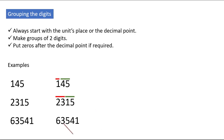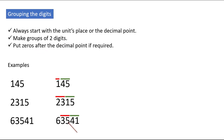For 63541, 41 will be the first group — always remember we need to make groups of two digits — 35 will be the second, and 6, since it is left alone, will be the third group.